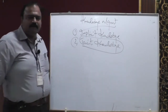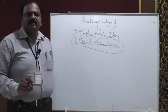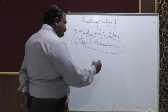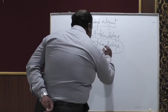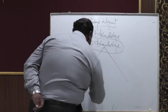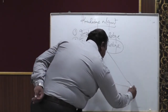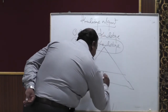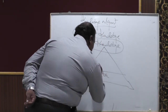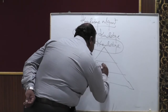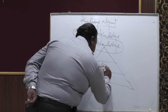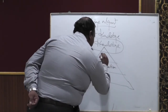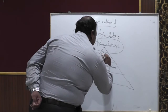Next we'll move on with the knowledge management process. It is a pyramid structure. The base is data, which is the most basic level, followed by information, and the last level is the gaining of knowledge.